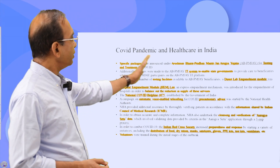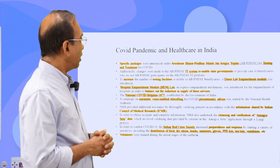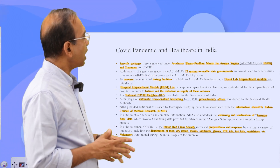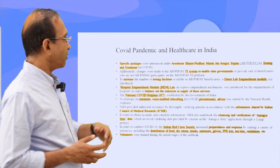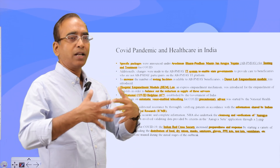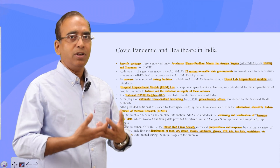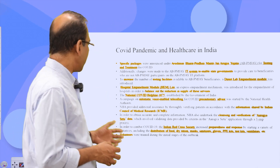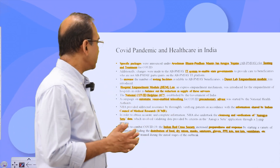During COVID time, health was paramount in terms of government priority and policy. One of the most important things was Ayushman Bharat, which was used for testing and treatment of COVID. This effort has attracted a lot of attention because it brought technology into the picture — a digital platform has been developed. For example, Aarogya Setu was used and a lot of data has been collected.